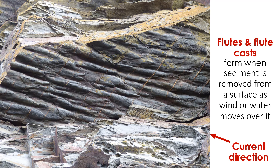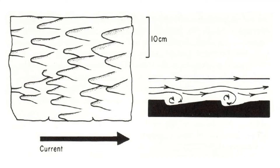A related group of sedimentary structures are created when sediment is removed from a surface as wind or water moves over it. We call these sedimentary structures flutes. When flutes are filled by sediment, flute casts are created. The two are always found together. Like ripples, flutes and flute casts are meaningful discoveries. A geologist can use the orientation of flutes and flute casts to determine the direction of the wind or water current that produced them.